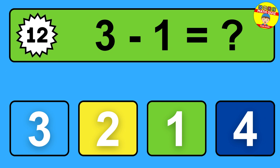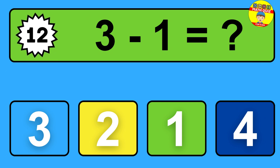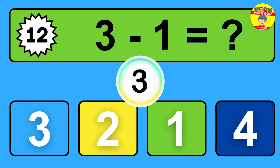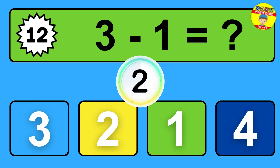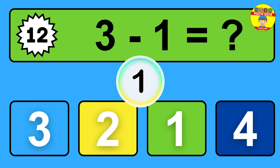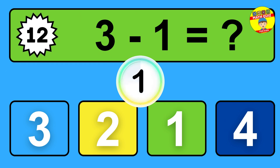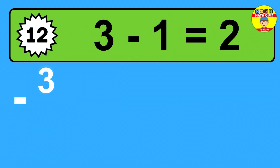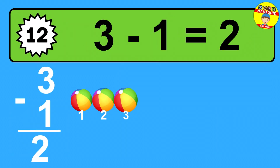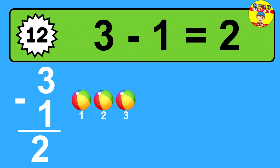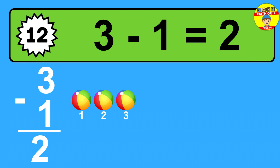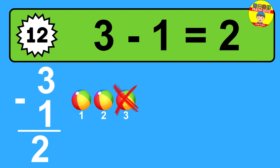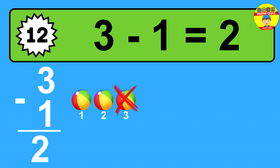Question twelve: three minus one equals what? The answer is three minus one is two. Let's count it: one, two.